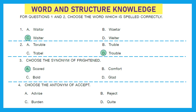Question 4: choose the antonym of 'accept.' Antonym means the opposite word. So if somebody is accepting, the opposite would be rejecting. Option B is the right answer: reject. The word 'accept' means to agree to something and the word 'reject' means to refuse to take something.